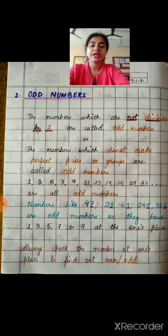Even bigger numbers like 47, 245, 321 are odd numbers as they have 1, 3, 5, 7 or 9 at the 1's place which are not divisible by 2.